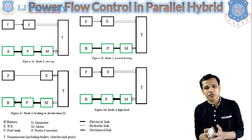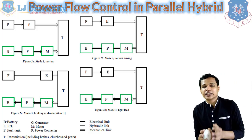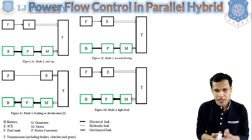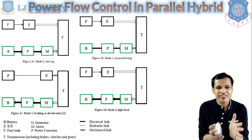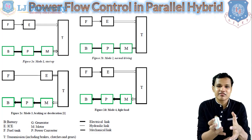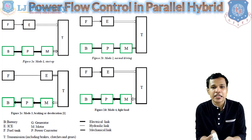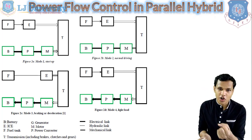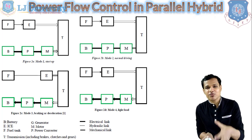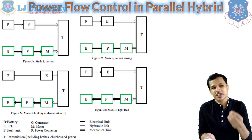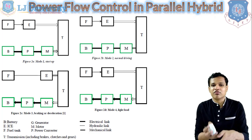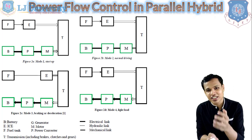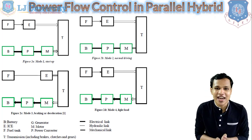In mode 3, figure 2C, the braking and deceleration mode is shown. The power from the engine will not be generated; the engine will be switched off. The power coming from the transmission due to deceleration will be transmitted via the motor, which works as a generator, through the power converter to the battery for charging.